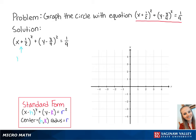Here, we know that h is equal to negative one-half, and we also know that k is equal to three-fourths.